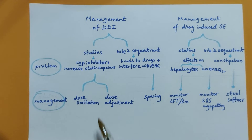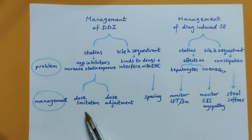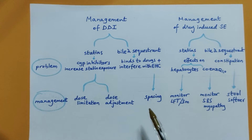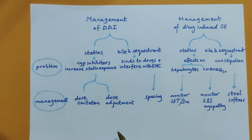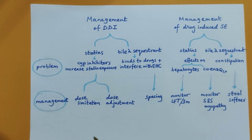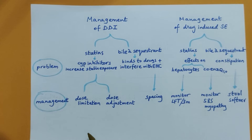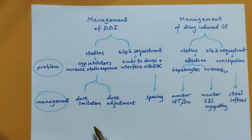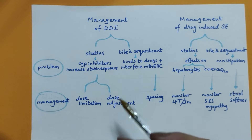Regarding dose limitation and dose adjustment, let's take a recommendation and discuss it. To avoid interaction of amiodarone with statins, limit the dose of simvastatin to less than or equal to 20 mg per day when used concomitantly with amiodarone. Let us understand this recommendation.